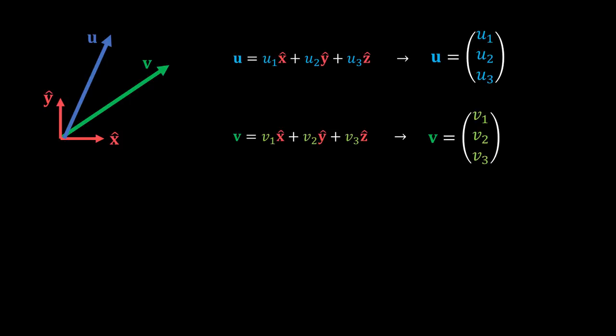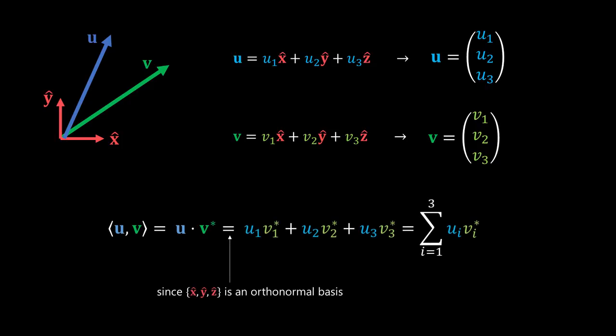Remember, in the x, y, z basis, the Hermitian inner product of vectors u and v was the dot product between u and the conjugate of v. The inner product is therefore the sum of the multiplication of each element in u with the conjugate of each corresponding element in v, and then adding all of the results together.